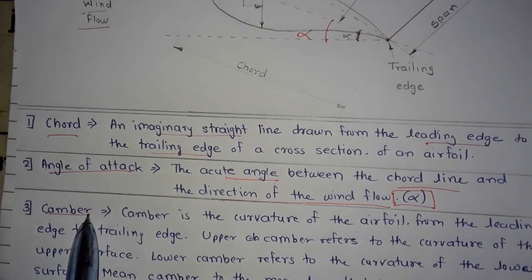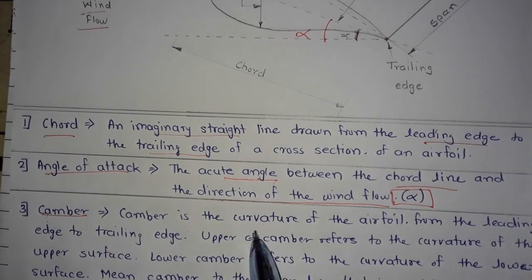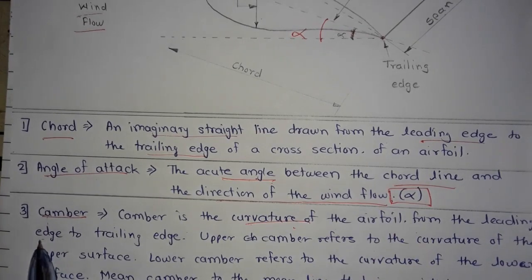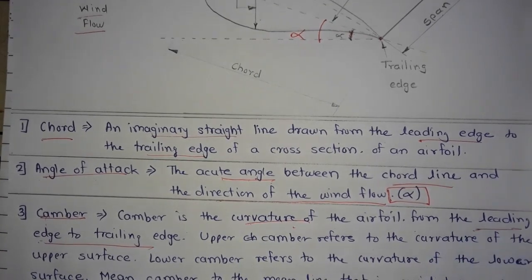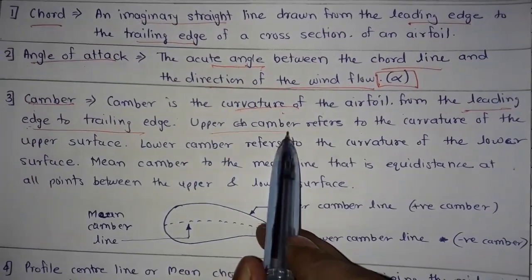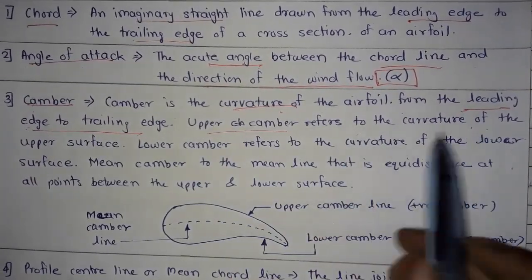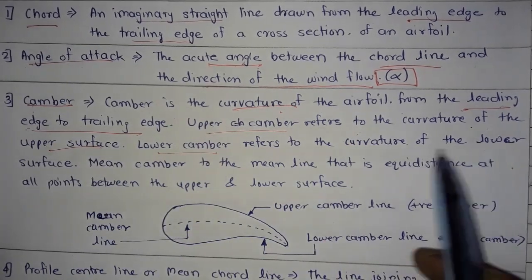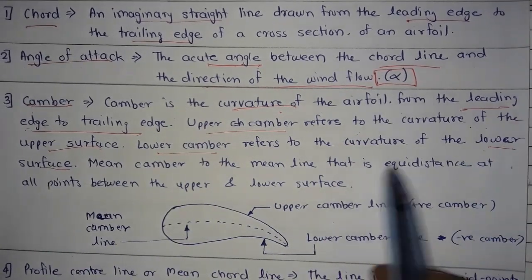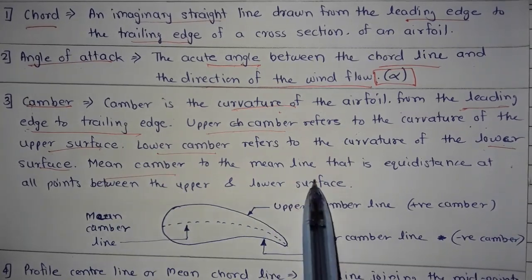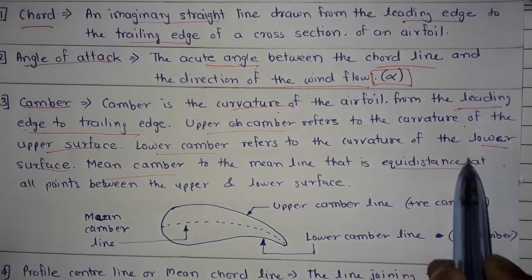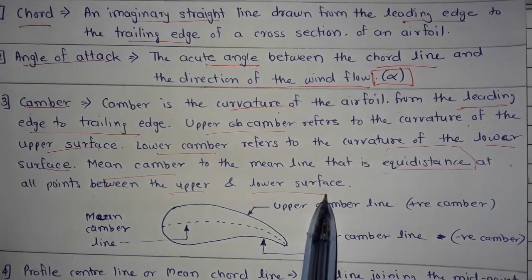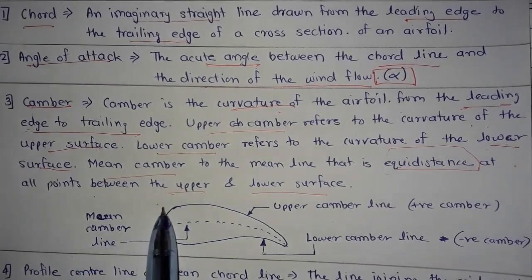Next is camber. Camber is the curvature of an airfoil from the leading edge to the trailing edge. The upper camber refers to the curvature of the upper surface, lower camber refers to the curvature of the lower surface, and mean camber refers to the mean line that is equidistant at all points between the upper and lower surface. To understand this, we will see the diagram.